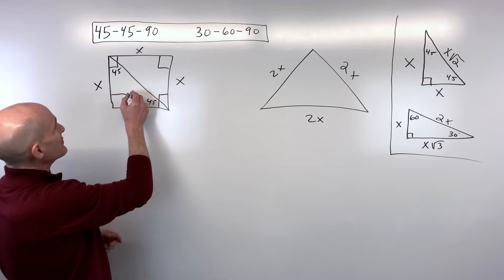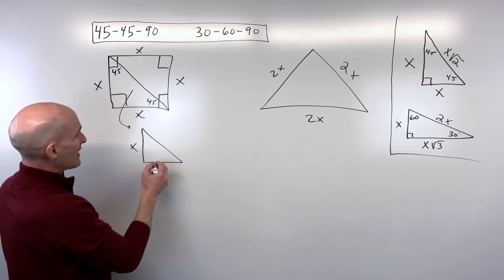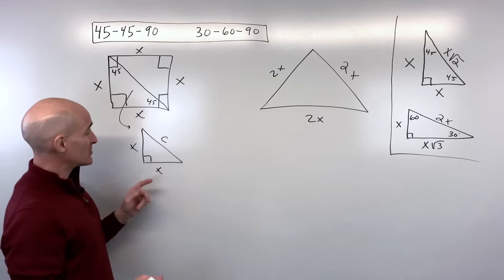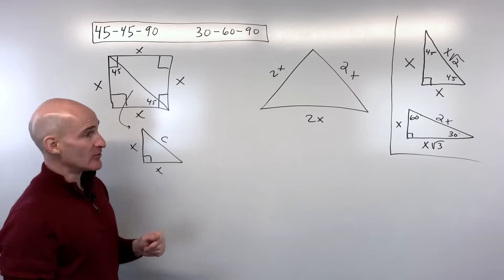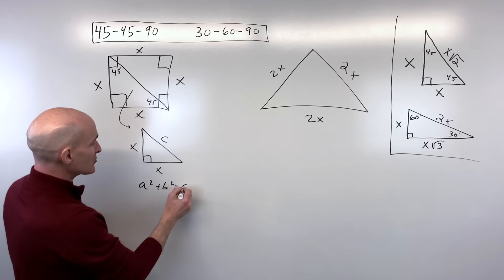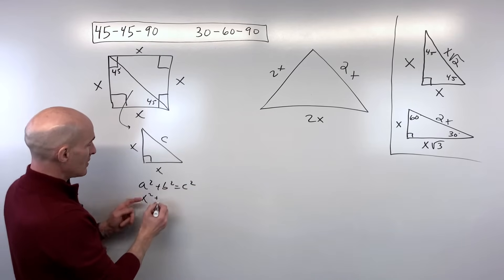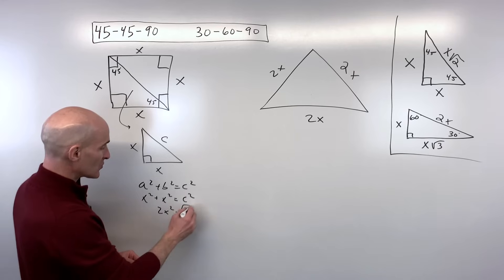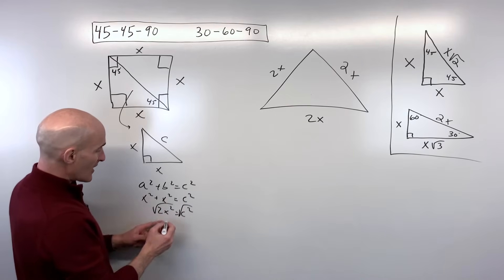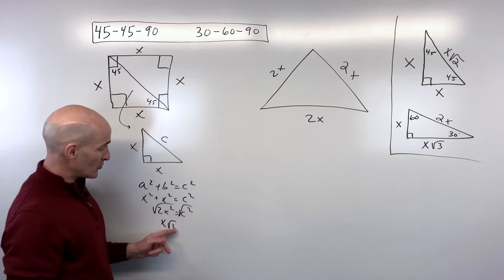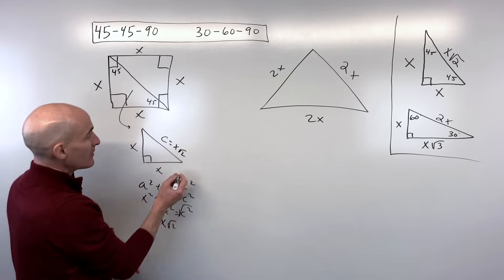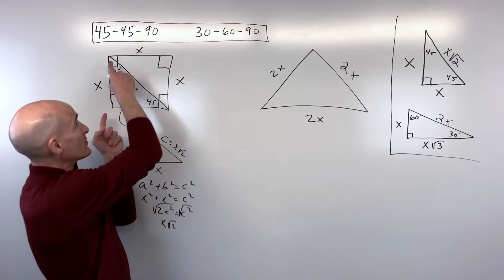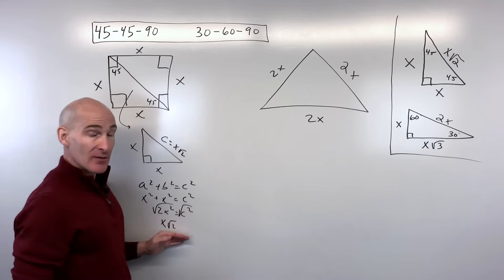Using the Pythagorean theorem on this triangle with legs x and x and hypotenuse c: a² + b² = c² gives x² + x² = c², so 2x² = c². Taking the square root, √(x²) is x and we're left with √2, so c = x√2. That's where these values come from for the 45-45-90: the two legs are equal because they come from the square's congruent sides, and the hypotenuse is x√2 from the Pythagorean theorem.